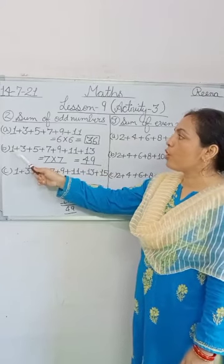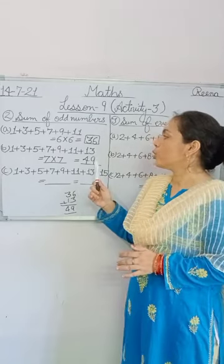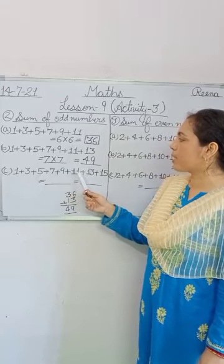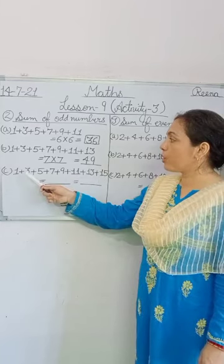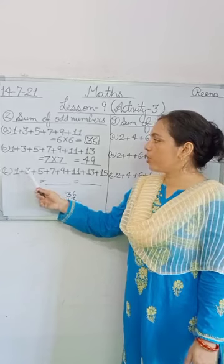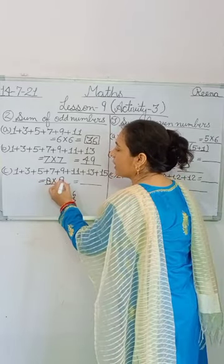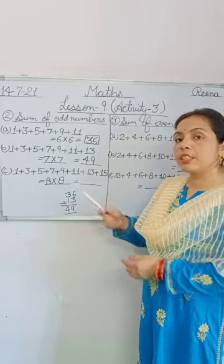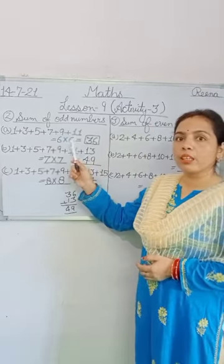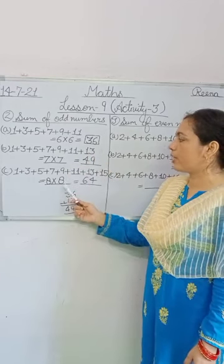The addition of all odd numbers from 1 to 13 is 49. Aap 1 se lekar 13 tak saare odd numbers ko jab add karte hain, to aapko 49 milta hai. In Part C, you have been given 1 plus 3 plus 5 plus 7 plus 9 plus 11 plus 13 plus 15. Count your total odd numbers: 1, 2, 3, 4, 5, 6, 7, 8 — total 8 numbers. So 8 multiplied by 8. Read the table of 8: 8 eights are 64. Your answer is 64. So according to pattern: 6 into 6 is 36, 7 into 7 is 49, 8 into 8 is 64.